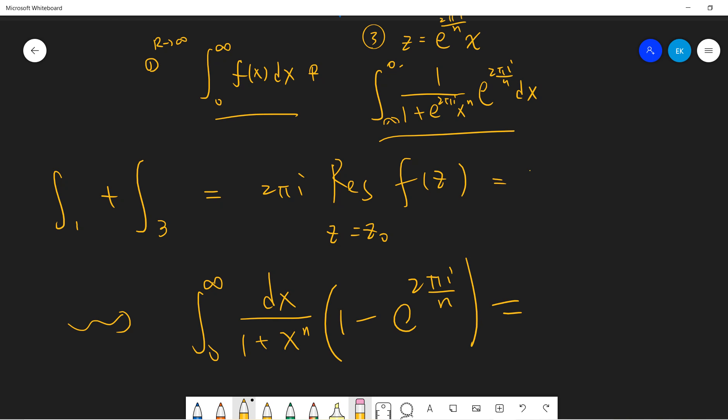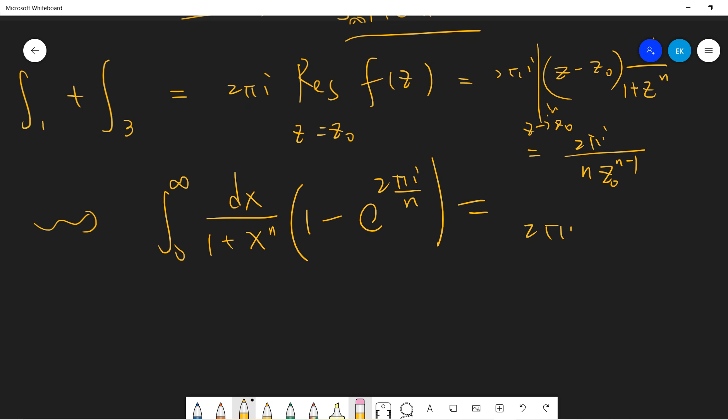So residue is very easy. You just z minus z0 divided by 1 plus z to n, limit z goes to z0. So you can use L'Hôpital's rule. You get 2 pi i over n z0 to the n-1. So we got 2 pi i over n z0 to the n-1.